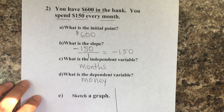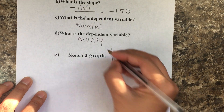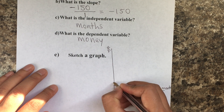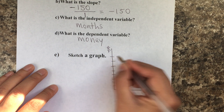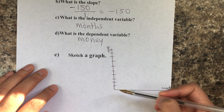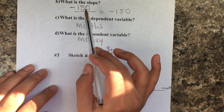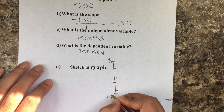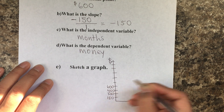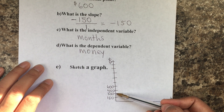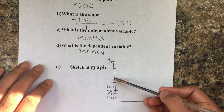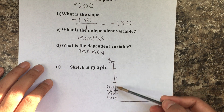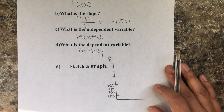To sketch the graph, we put months on the x-axis and money on the y-axis. To make our life easier, we can do it by 150s: 150, 300, 450, 600. If you decided to do it by 50s, you'd go 50, 100, 150 ... all the way up to 600, which is your initial point.